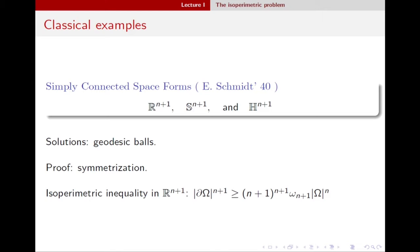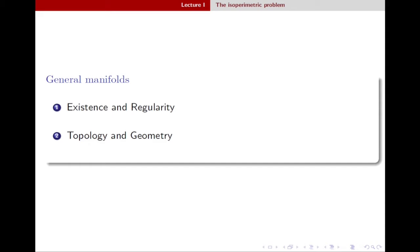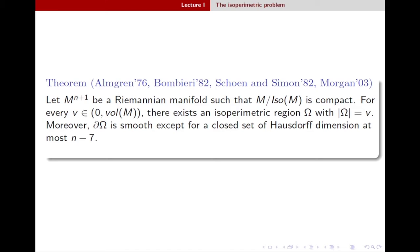If you move to other Riemannian spaces, symmetrization techniques are not available, so you need different methods to approach the isoperimetric problem. For general Riemannian manifolds, we divide the problem into two parts. The first part concerns existence of isoperimetric regions and their regularity — a non-trivial problem, since for non-compact manifolds minimizers can drift off to infinity. The second part concerns the topology and geometry of these minimizers. In this mini-course, I will focus only on the second part, since we already have a very successful result tackling existence and regularity.